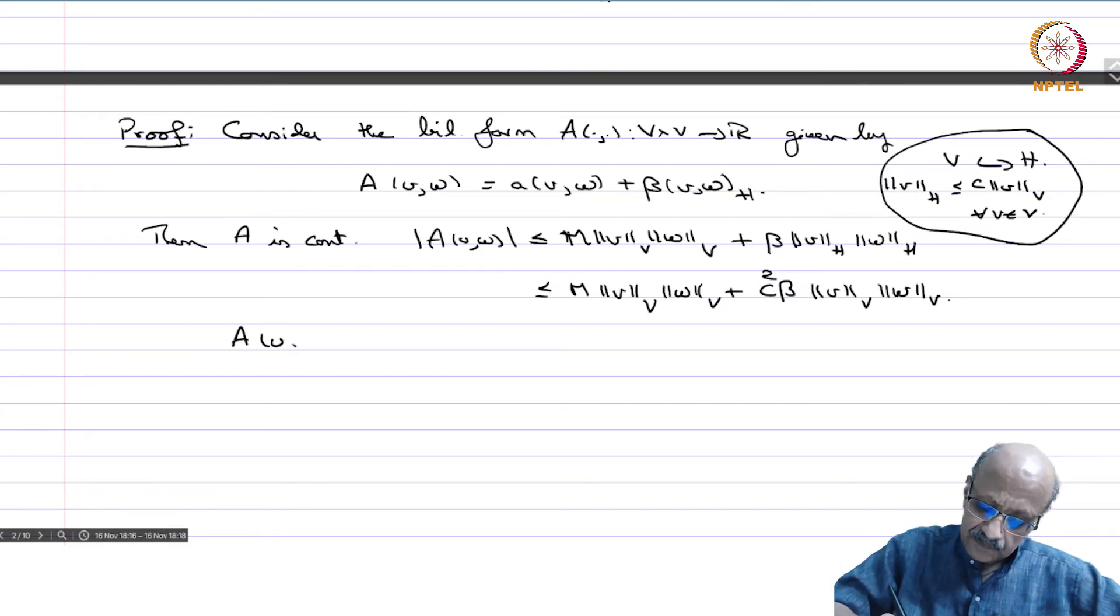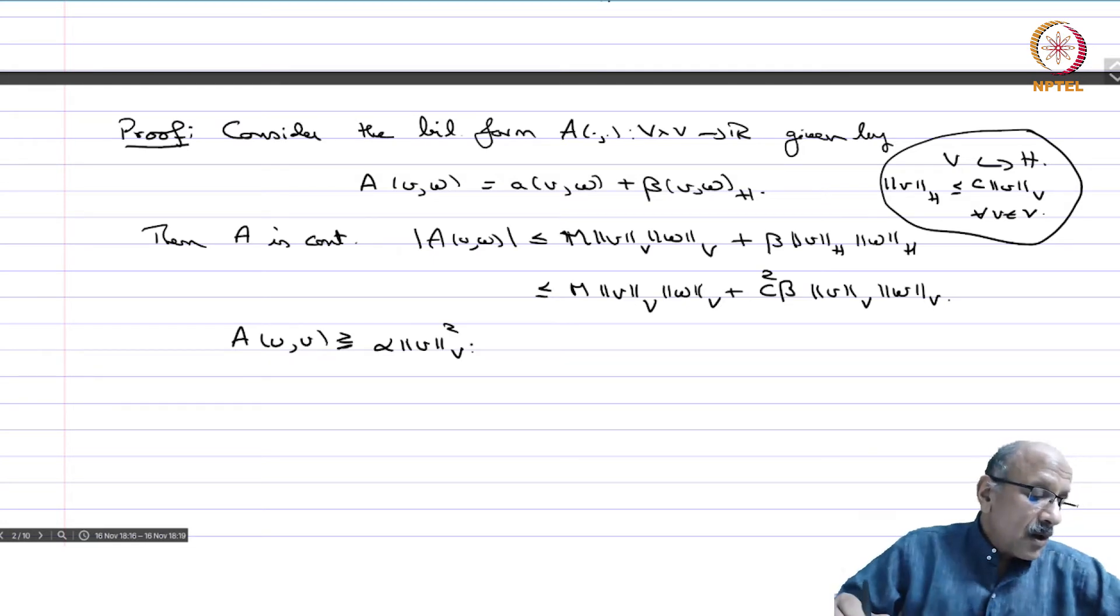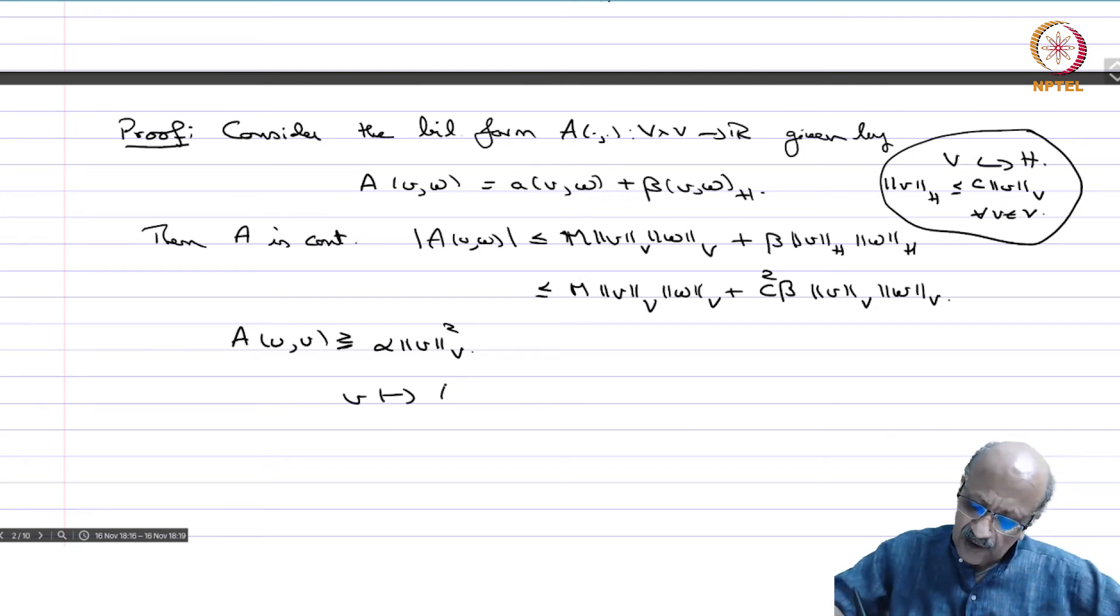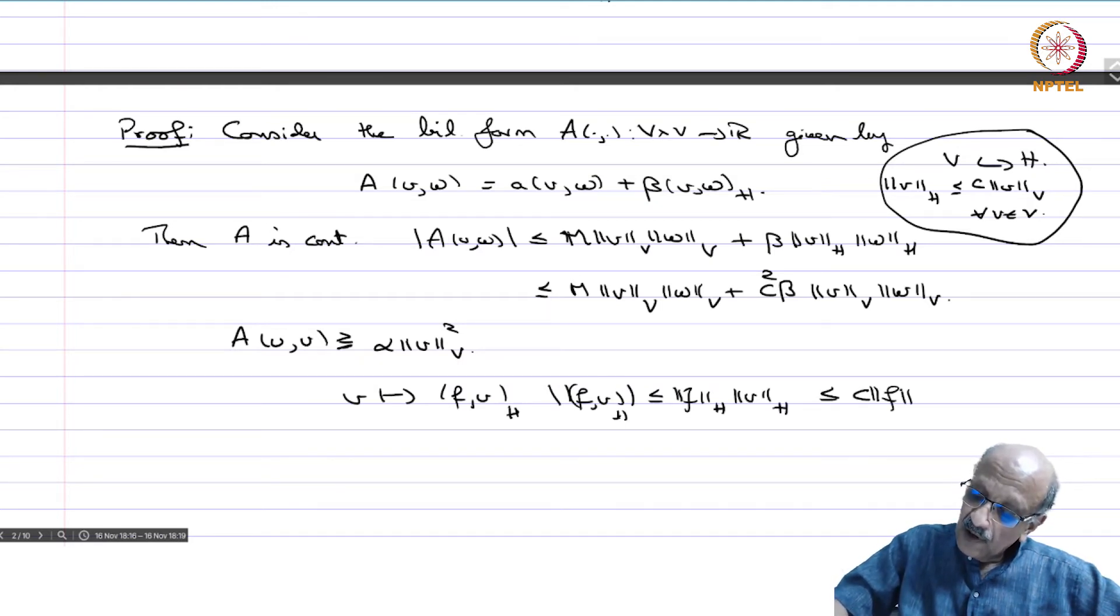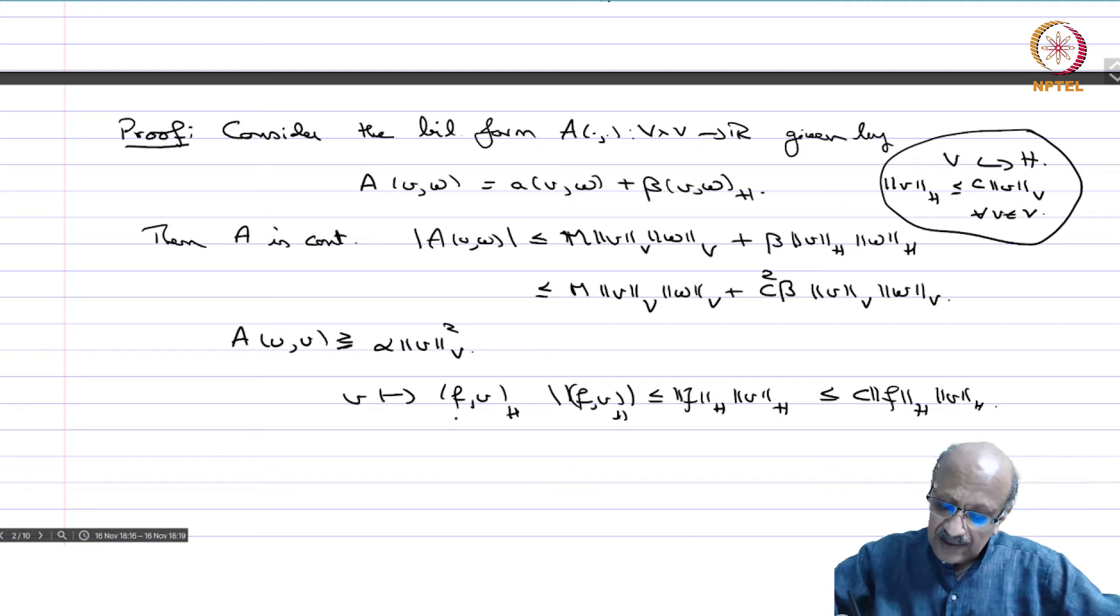What about A(v,v)? It's ≥ α||v||²_V. Also, the map v → F(v) is continuous because |F(v)| ≤ ||F||_H||v||_H ≤ C||F||_H||v||_V. Therefore, by the Riesz representation theorem, you can apply Lax-Milgram.